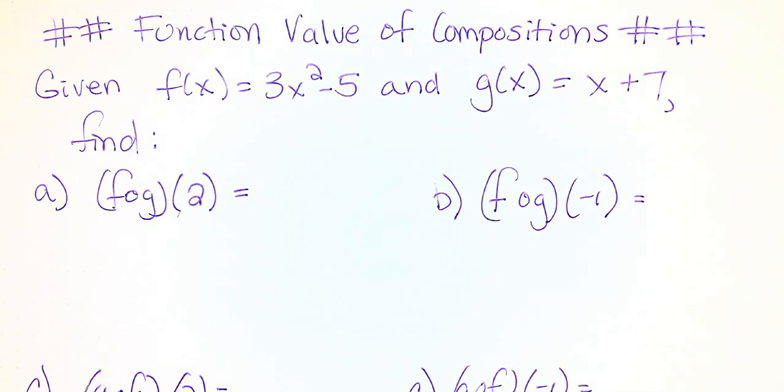This lesson is about function value of compositions. When we're given two functions, in this case f of x equals 3x squared minus 5 and g of x equals x plus 7, we want to find f of g of 2, f of g of negative 1, g of f of 2, and g of f of negative 1.